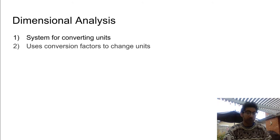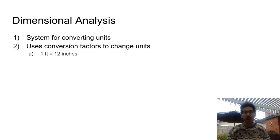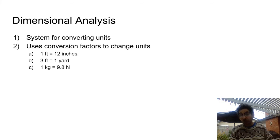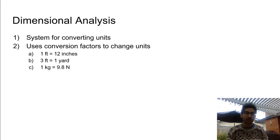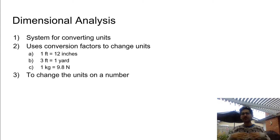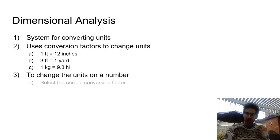Dimensional analysis is a system for converting units. It uses conversion factors to change the units. Conversion factors would be things like: one foot equals 12 inches, three feet equals one yard, or one kilogram equals 9.8 Newtons. They just express that one unit is equal to some amount of another unit.